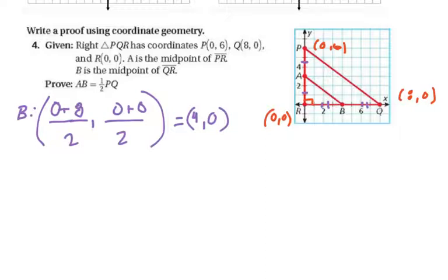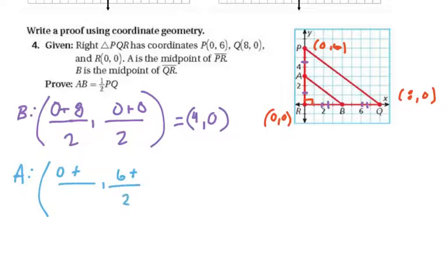The other midpoint we need is A. A takes the X's and Y's from P — which are 0 and 6 — and averages them with the coordinates of R, which are (0, 0). So this gives a coordinate of (0+0)/2 = 0, and (6+0)/2 = 3. So A is at (0, 3).